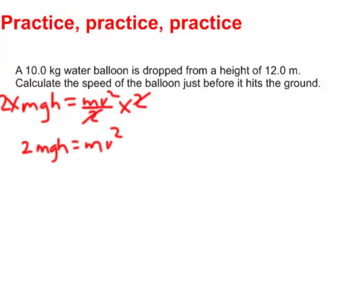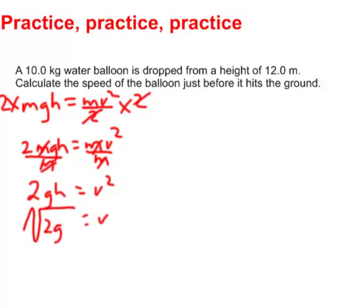If I want to get velocity by itself, I would divide by mass on both sides and get a cancellation, leaving velocity squared. On the other side, the masses cancel out and I'm left with two times gravity times height. Then velocity will simply be the square root of two times gravity times height — I can really simplify my equation.